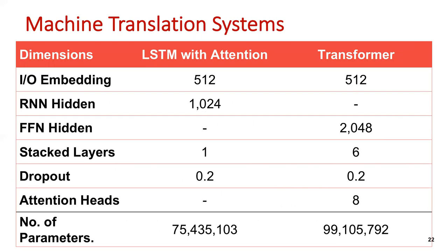We compared our two systems with the baseline. We trained an LSTM with global attention similar to Luong et al. 2015, and a transformer system with self-attention similar to Vaswani et al. 2017. Hyperparameter differences are presented in the table: 512 input and output embeddings for both systems; hidden size 1024 for the RNN and feed-forward size 2048 for the transformer; single-layer LSTM versus 6-layer transformer; global dropout of 0.2 for both; and 8 attention heads for the transformer. In total, the LSTM has 7 million parameters while the transformer has 99 million.